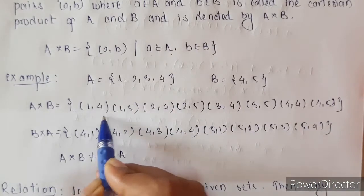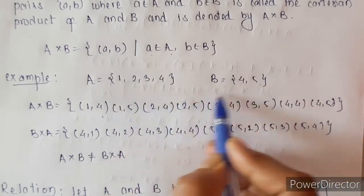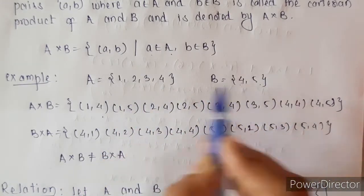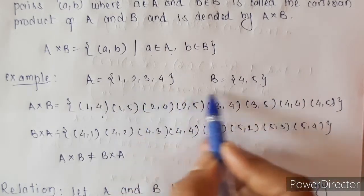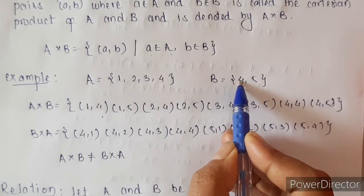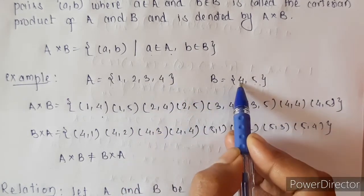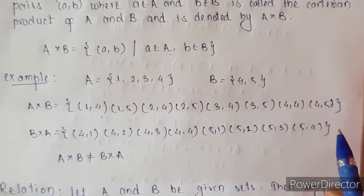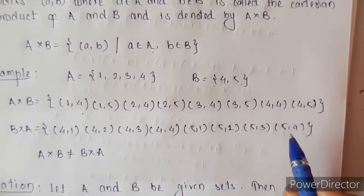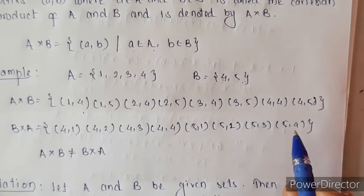So A cross B = {(1,4), (1,5), (2,4), (2,5), (3,4), (3,5), (4,4), (4,5)}. This is our Cartesian product of A cross B.